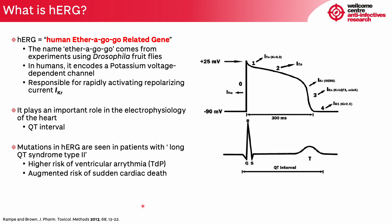HERG is the acronym for Human Ether-a-go-go Related Gene. That name comes from genetic experiments in Drosophila fruit flies, and in humans it encodes a potassium voltage-dependent channel that is responsible for the IKR repolarizing current in the heart. It plays a really important role in the physiology of the heart, especially in what we call the QT interval, that is the distance in seconds between the Q and the T wave of an electrocardiogram.